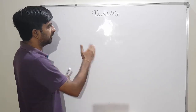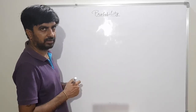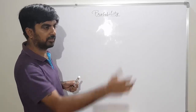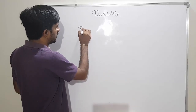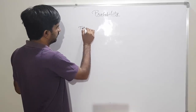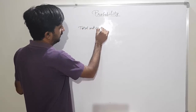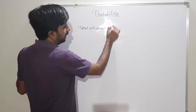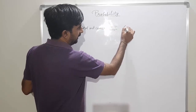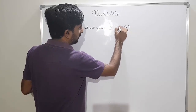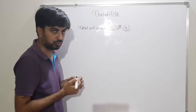If you toss a coin, how many possible answers are there? There are two possible outcomes — either head will come or tail will come. So total outcomes are two.